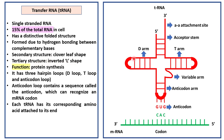It has three hairpin loops: D-loop, T-loop and anticodon loop. The anticodon loop contains a sequence called anticodon, which can recognize an mRNA codon. Each tRNA has its corresponding amino acid attached to its end.